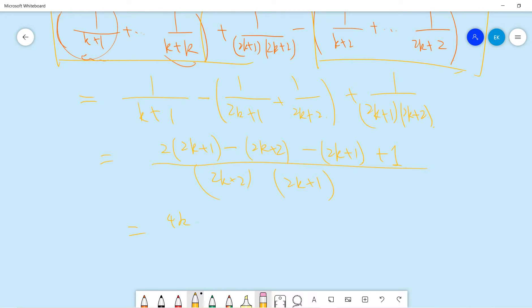And now this is 4k plus 2, minus 2k plus 2, minus 2k plus 1, divided by 2k plus 2, 2k plus 1. So you see 2k, 2k, 2k, which is 0.